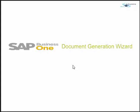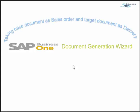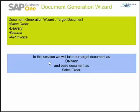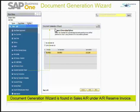In this session we will learn about the Document Generation Wizard. We will take the base document as our Sales Order and the target document as Delivery. Document Generation Wizard has many target documents you can create: sales orders, deliveries, returns, and AR invoices. In each wizard you choose only one target document type. The wizard is found in the Sales AR module as Document Generation Wizard.